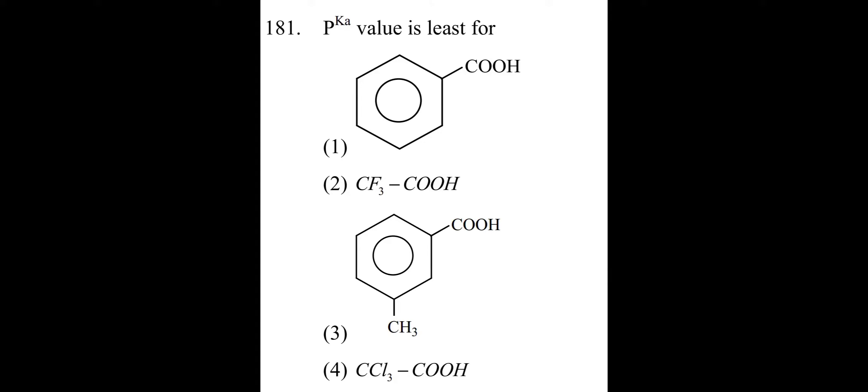pKa value is least for - pKa least means Ka highest. When Ka is highest, that's the best acid. For strong acids, Ka should be high and pKa should be low. When pKa is low, the acid is going to be a strong acid. So pKa is low means strong acid.